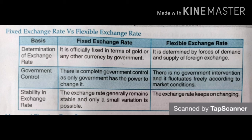Now the difference between fixed and flexible exchange rates. Fixed exchange rate is officially fixed in terms of gold or other currencies by the government. Flexible exchange rate is determined by the forces of demand and supply in the foreign exchange market. Regarding government control: fixed exchange rate is completely government-controlled, as only the government has the power to change it, while in flexible exchange rate there is no government intervention — it fluctuates freely according to market conditions.